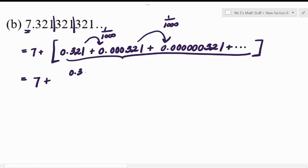So the sum would equal the first term over one minus the common ratio. So we'd have 7 plus 321 one-thousandths divided by 999 one-thousandths.